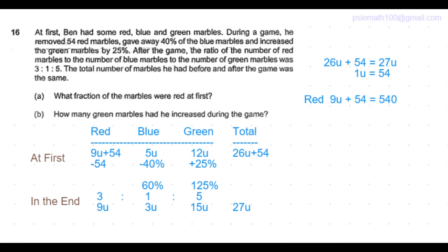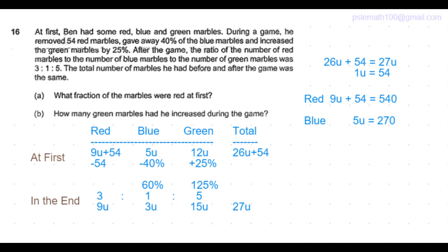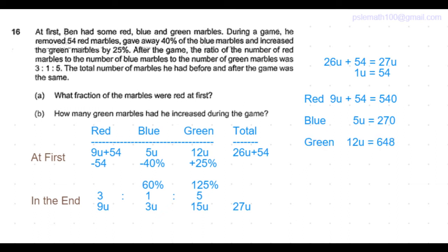So the number of red marbles he had at first is 9 units plus 54, which is 9 times 54 plus 54 equals 540 marbles. The number of blue marbles he had at first is 5 units, which is 5 times 54 equals 270 marbles.